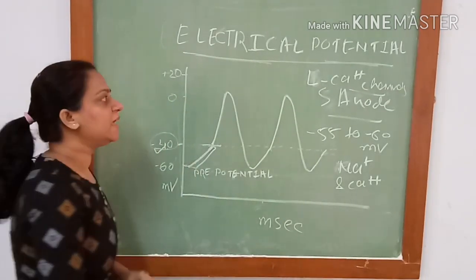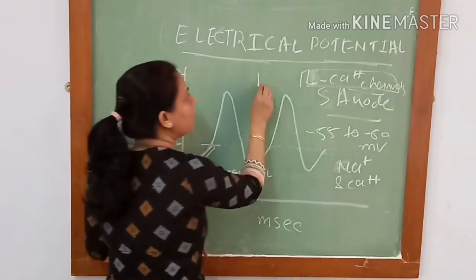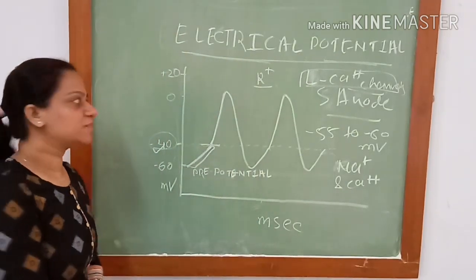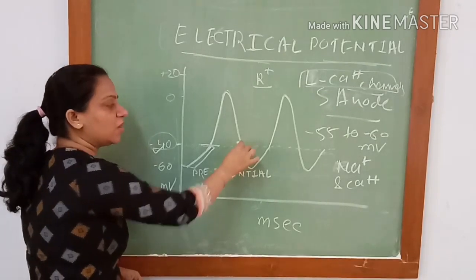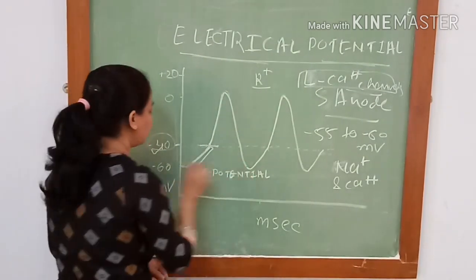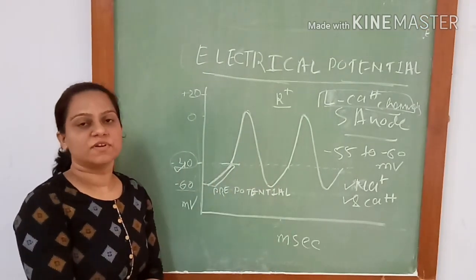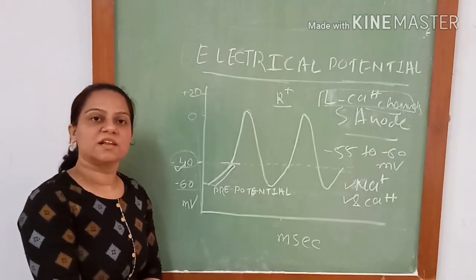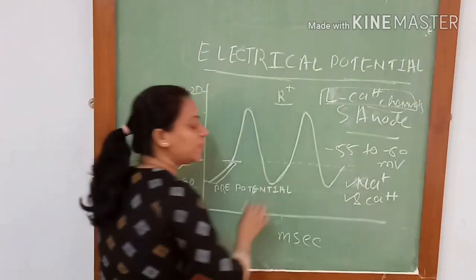Later, there will be closure of these calcium channels and opening of potassium channels. Opening of the potassium channels brings the phase of repolarization. Once the membrane potential comes to around minus 55 to minus 60 mV again, there will be entry of sodium and calcium ions inside the cell through the leaky channels, bringing the next cycle of pre-potential.